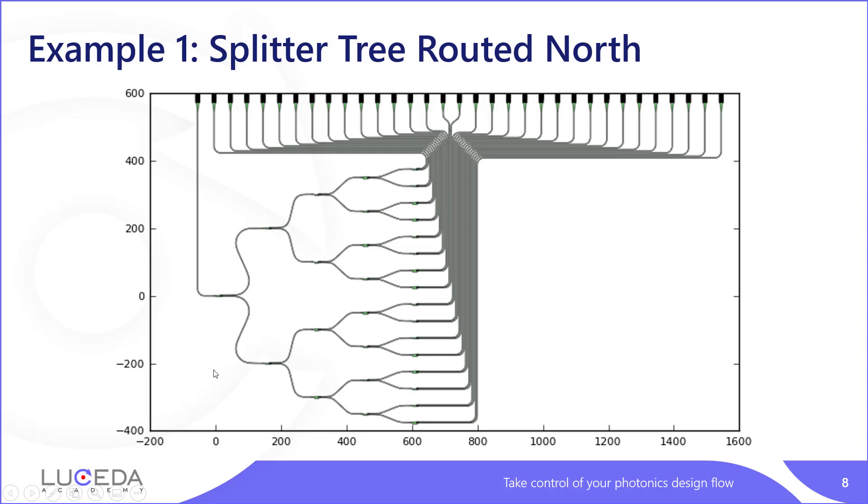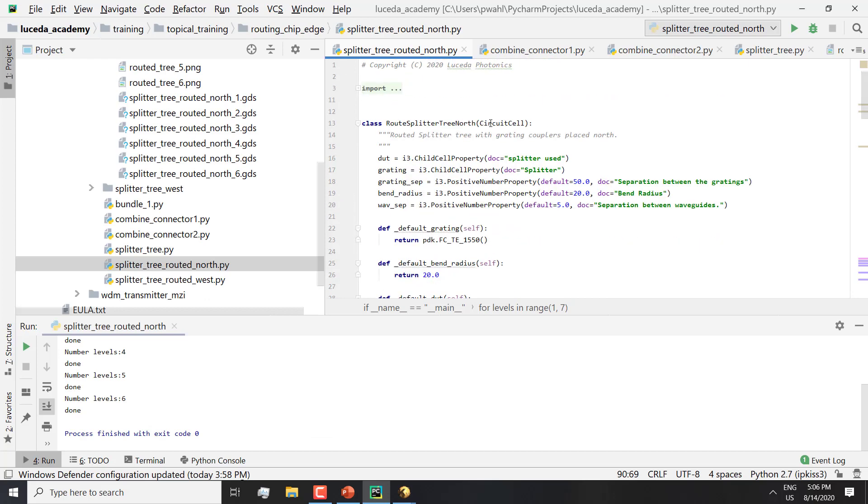There are more complete examples available as well. For instance, a splitter tree routed to the north. Here we have the same thing, a bus of waveguides that then fans out using Manhattans and S-bends. Let's dig into the actual code on Lucida Academy to see how it works.